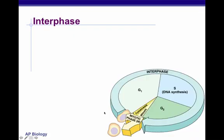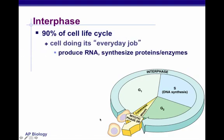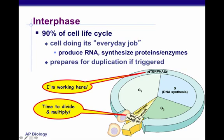Starting with interphase: 90% of the cell life cycle is engaged in interphase. This is when a cell is doing its everyday job — producing RNA, synthesizing proteins and enzymes. It can also prepare for duplication if triggered. In this pie chart, mitosis is a very small segment, but we also have G1, S, and G2.